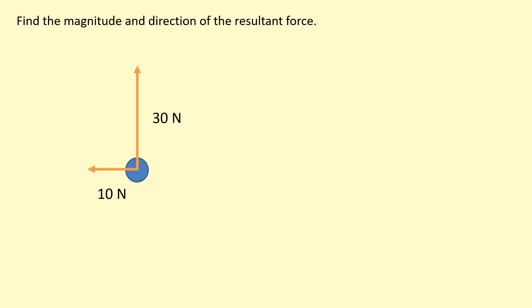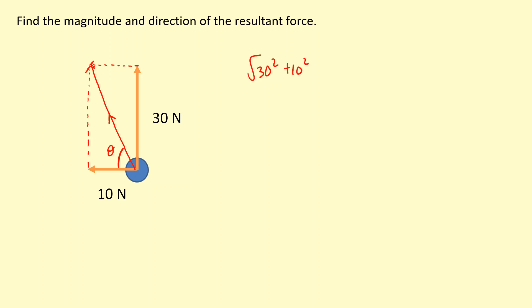Here we have forces at right angles to each other, so you can find the resultant, which is going to be towards the top left, by copying the vectors tip to tail like this, and you get a rectangle because they're at right angles. The resultant force is towards the top left, and we need to find its magnitude and direction by finding theta. So you can use Pythagoras: 30 squared plus 10 squared, square root, which gives us 32 newtons.